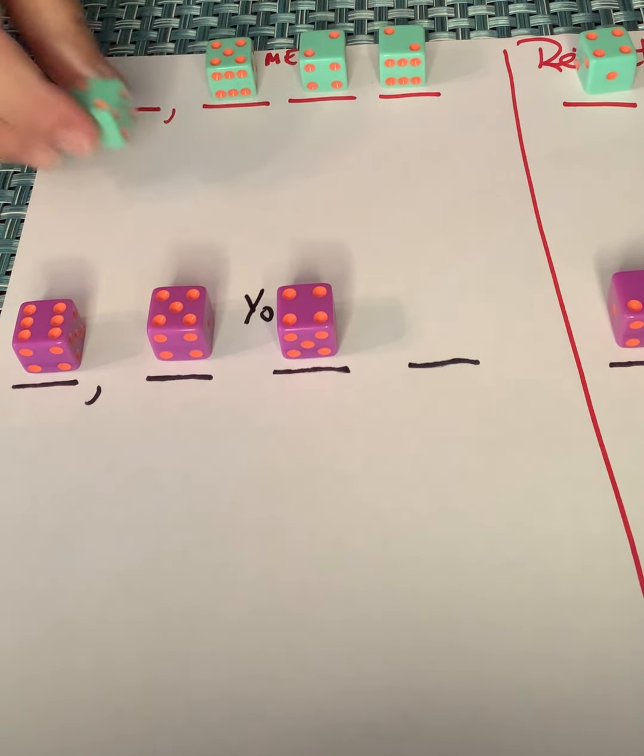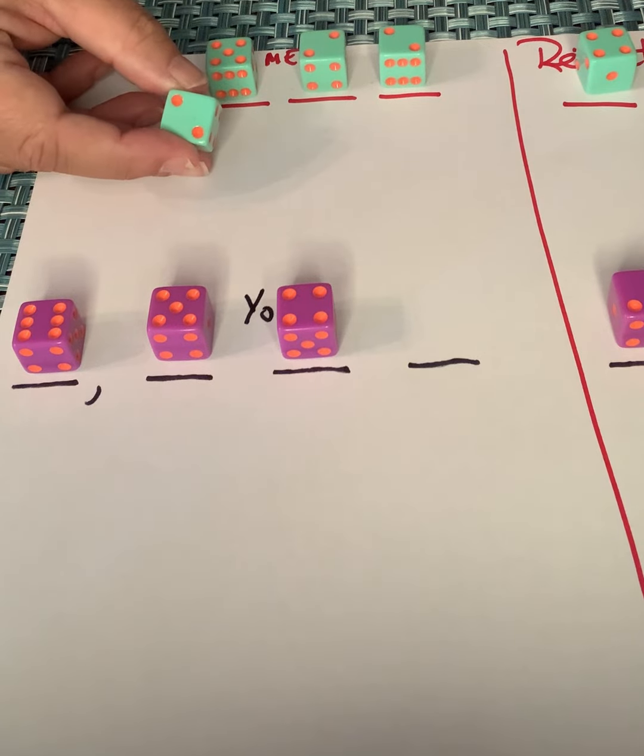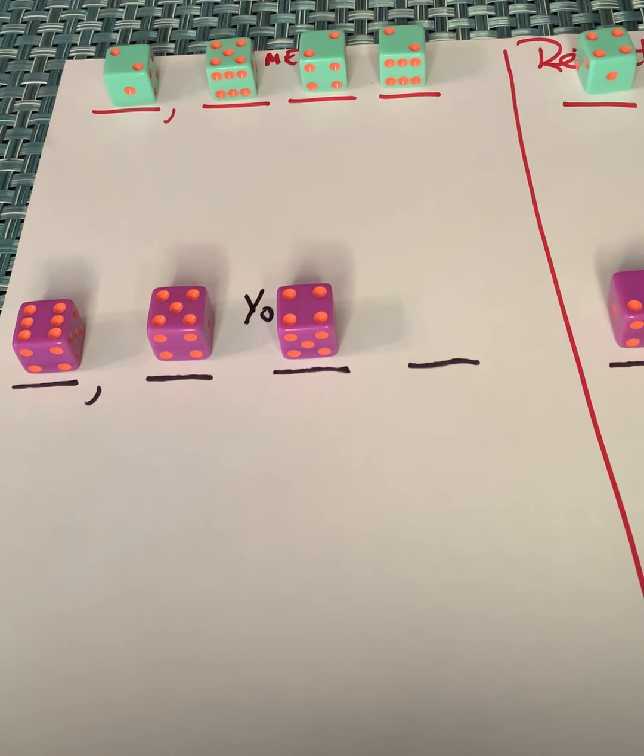All right. I roll my last dice. Oh my goodness. I have to use my two because that's the only space that's left over for the thousands and you can't switch dice around or numbers around. Once you put them in place, they have to stay there.